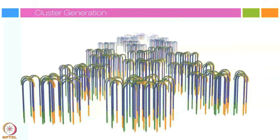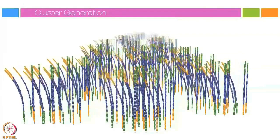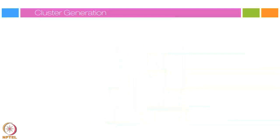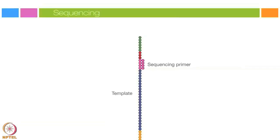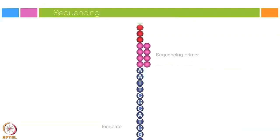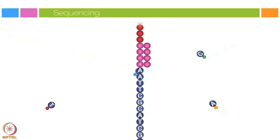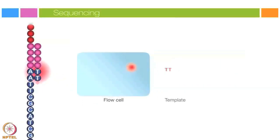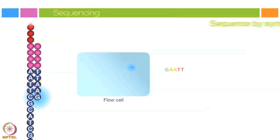After bridge amplification, the reverse strands are cleaved and washed off, leaving only the forward strands. The three-prime ends are blocked to prevent unwanted priming. Sequencing begins with the extension of the first sequencing primer to produce the first read. With each cycle, four fluorescently tagged nucleotides compete for addition to the growing chain, and only one is incorporated based on the sequence of the template. After the addition of each nucleotide, the clusters are excited by a light source and a characteristic fluorescent signal is emitted. This proprietary process is called sequencing by synthesis.